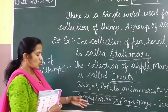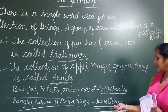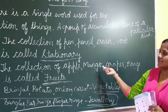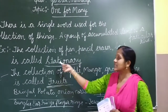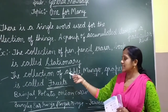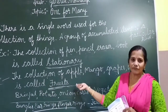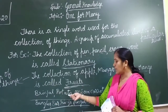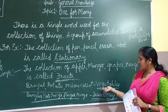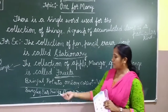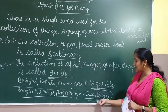So like this, the collection of a particular kind — we call stationery, fruits, vegetables, jewellery. For example, crow, parrot, pigeon, sparrow — we call them as birds. Tiger, lion, buffalo — we call them as animals. There is a single word used for the collection of things, or a group of accumulated items of a particular kind.